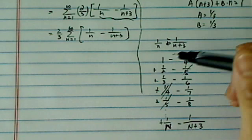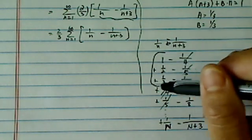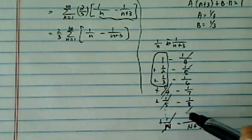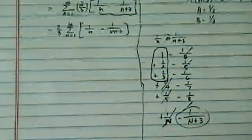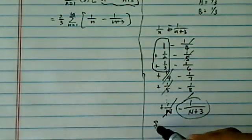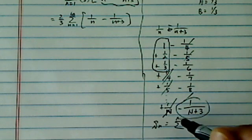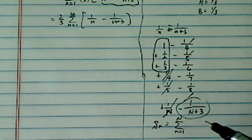So as you can see, the terms are left over, this one will cancel with over here, and the last one is here. So if we do a partial sum is equal to n, little n to bigger n.